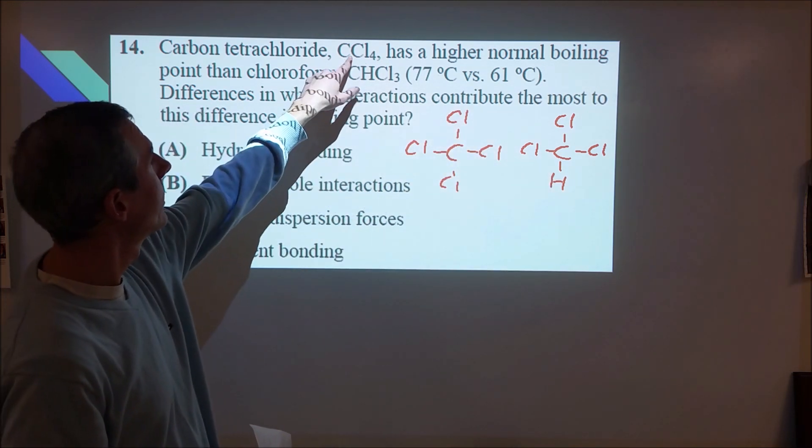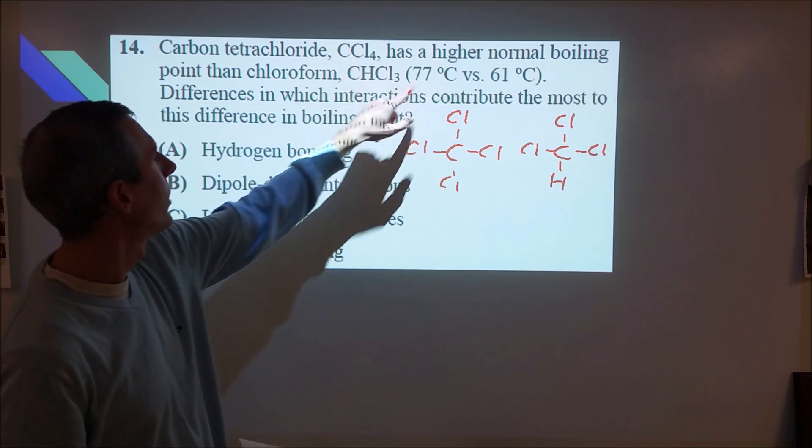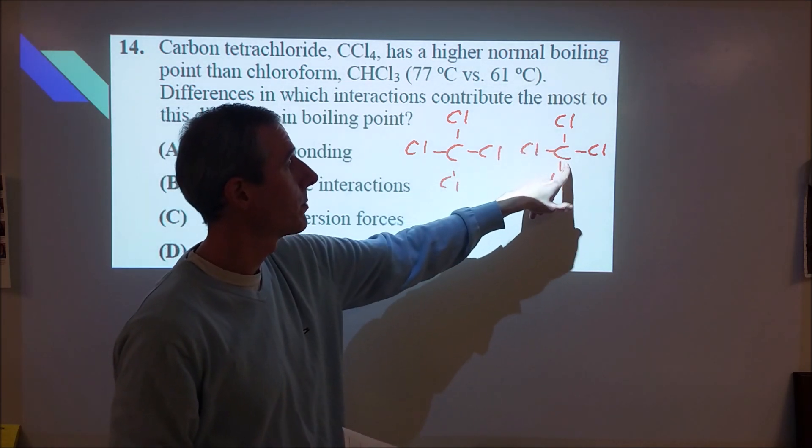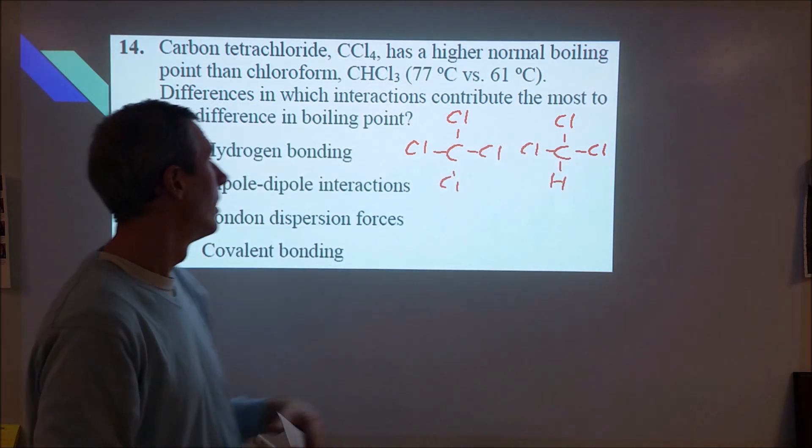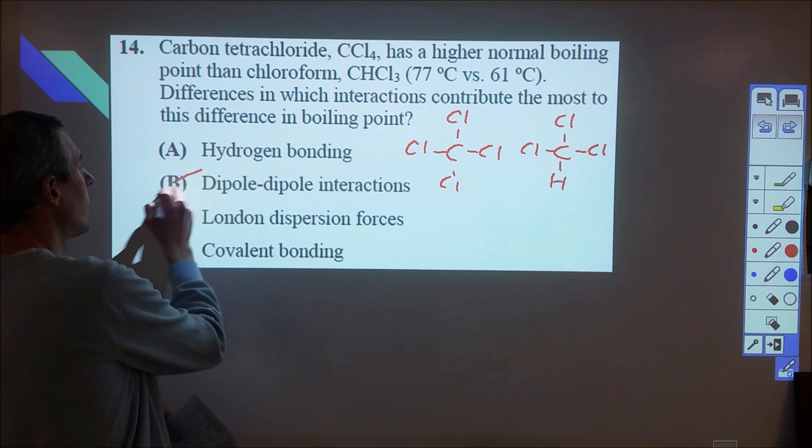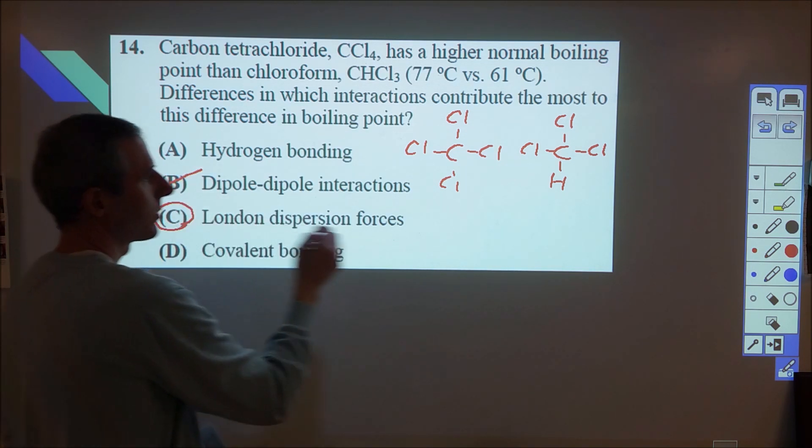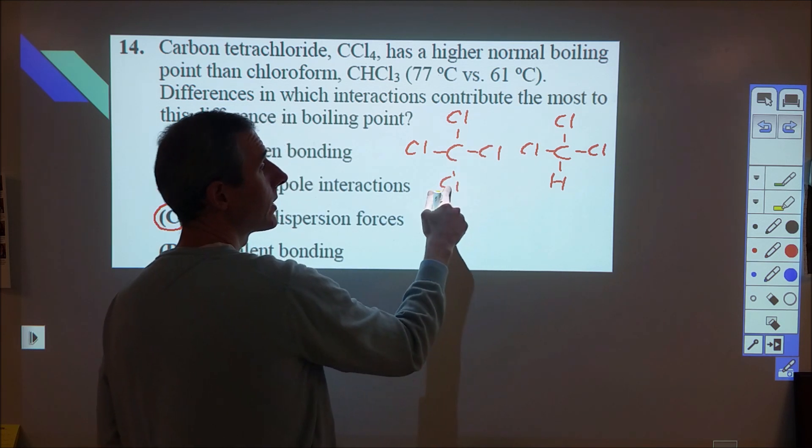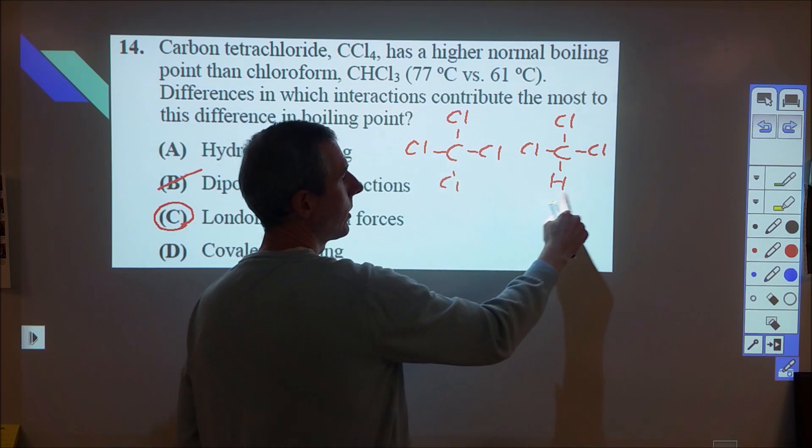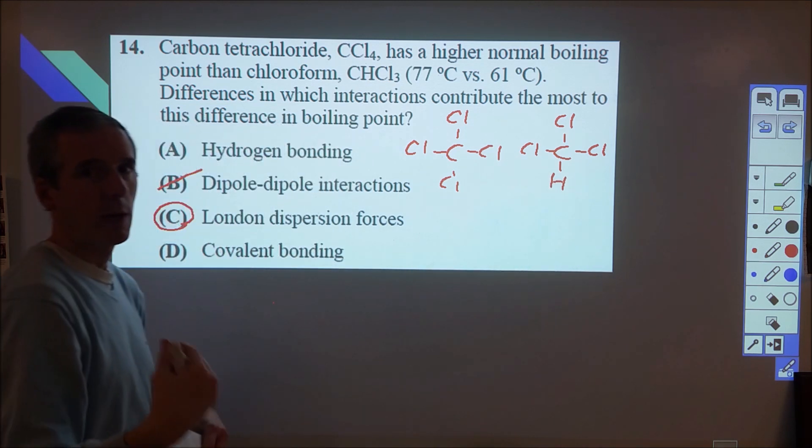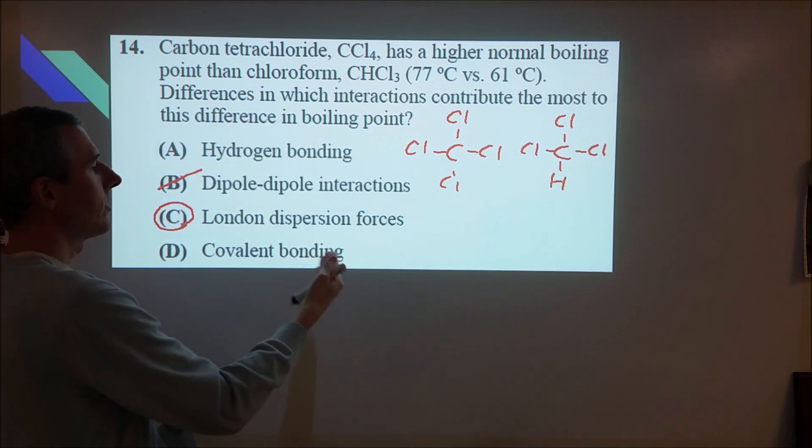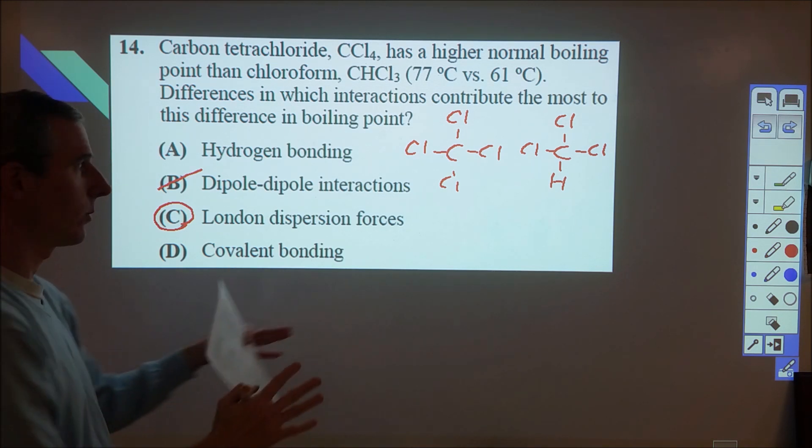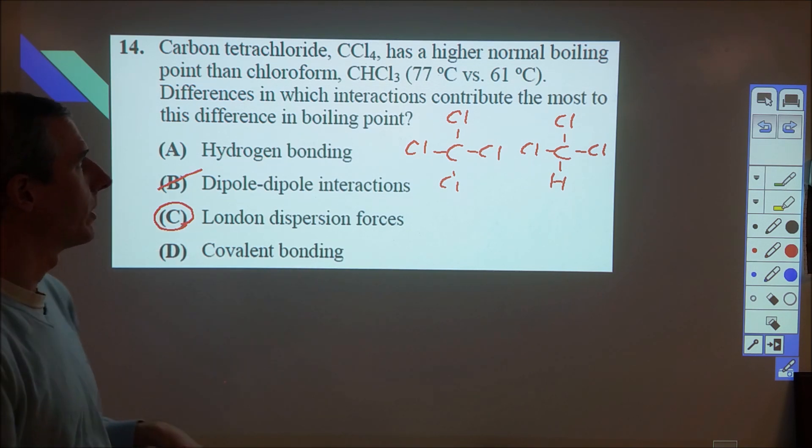However, if you look carefully, the CCl4 has the higher boiling point, which means that this one has the stronger intermolecular forces even though this potentially has a small amount of dipole-dipole interaction. Even though we would be drawn towards this, the better choice here is dispersion forces, because we're showing the difference being that this one is better because we have more electrons present in this extra chlorine compared to this hydrogen. Having more electrons creates stronger dispersion forces because we have better polarizability of all those electrons. So C is our best choice.